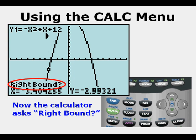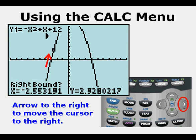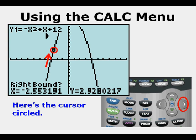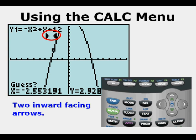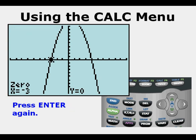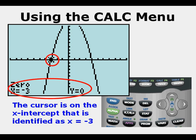Now the calculator asks, right bound? Arrow to the right to move the cursor to the right and above the x axis. Here is the cursor circled. The cursor is now at the right of the x intercept, or zero. Press enter. Note the two inward facing arrows. Press enter again. The cursor is on the x-intercept that is identified as x equals negative three.